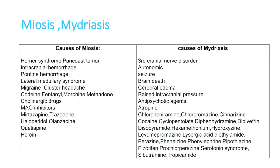Common causes of miosis include Horner's syndrome — the most important cause — pontine hemorrhage, lateral medullary syndrome, cluster headache, migraine, and if the patient is on morphine or codeine, they can have small pupils.